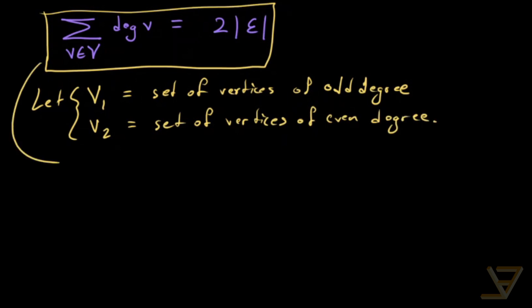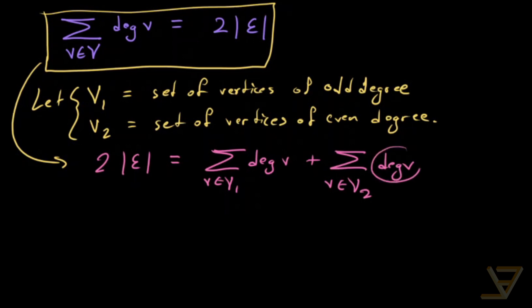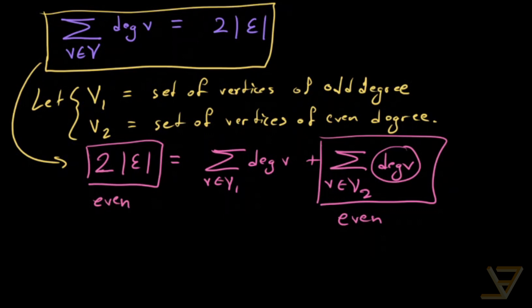So by this equation here, what we get is that two times the cardinality of the edge set is equal to, if we split up the sum, the sum over v in V₁ of deg(v) plus the sum over v in V₂ of deg(v). And what we know is that each of these is even by definition. So this is even, and this is two times something, so this is also even, which forces this to also be even.